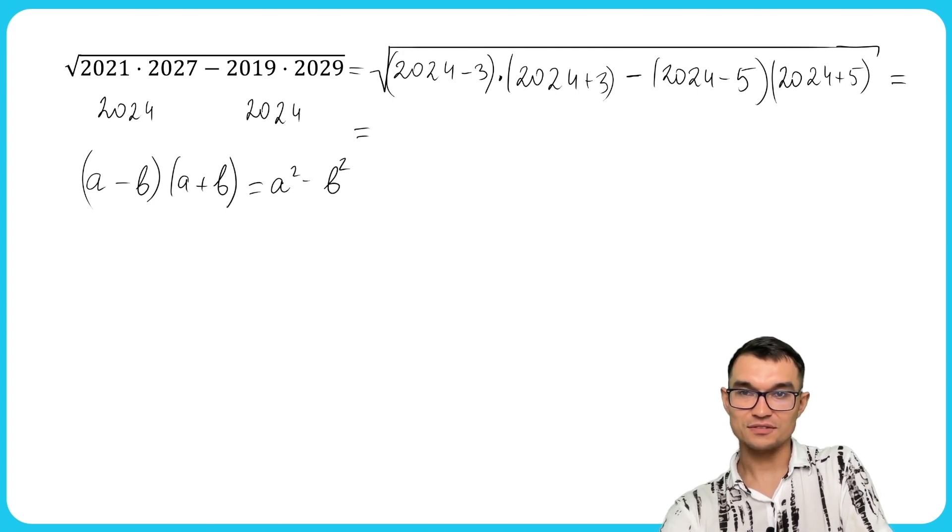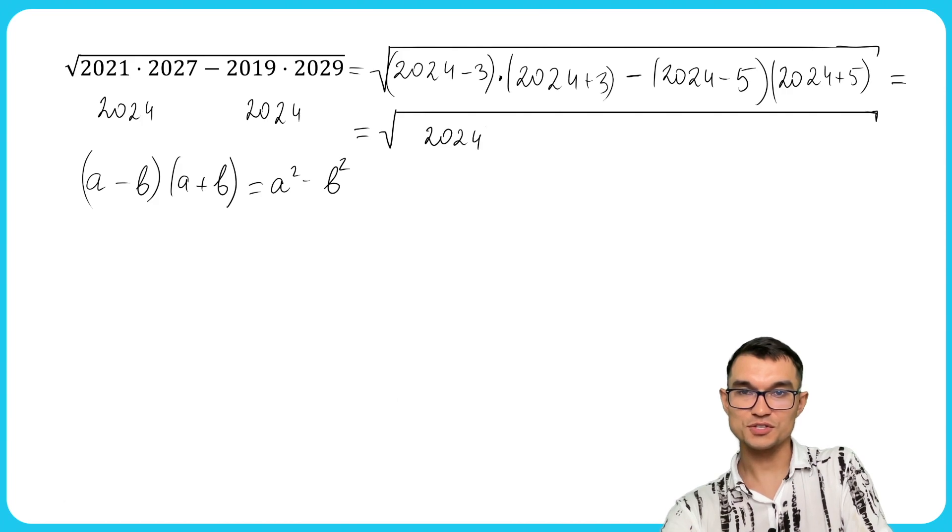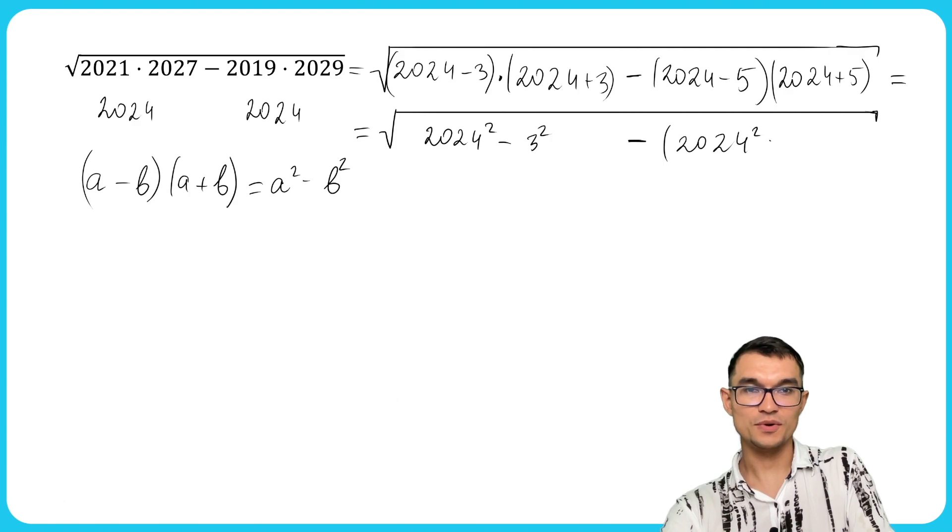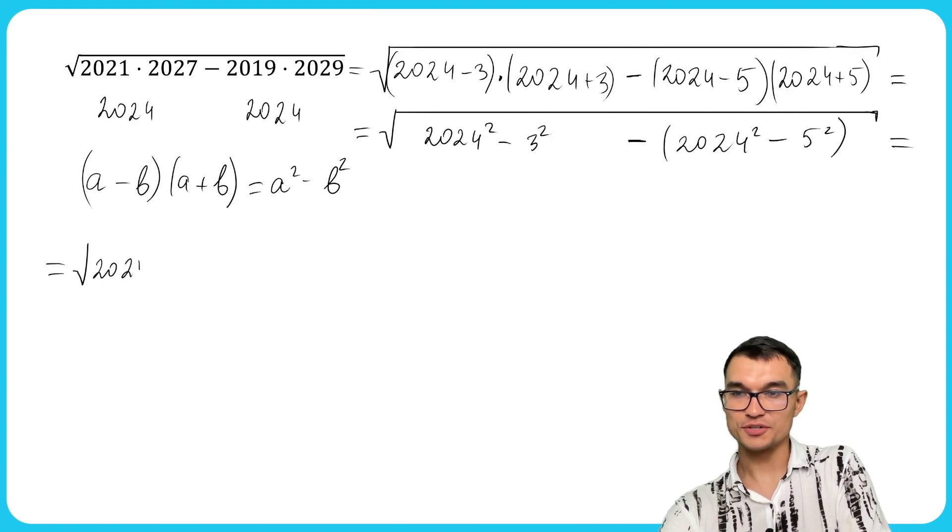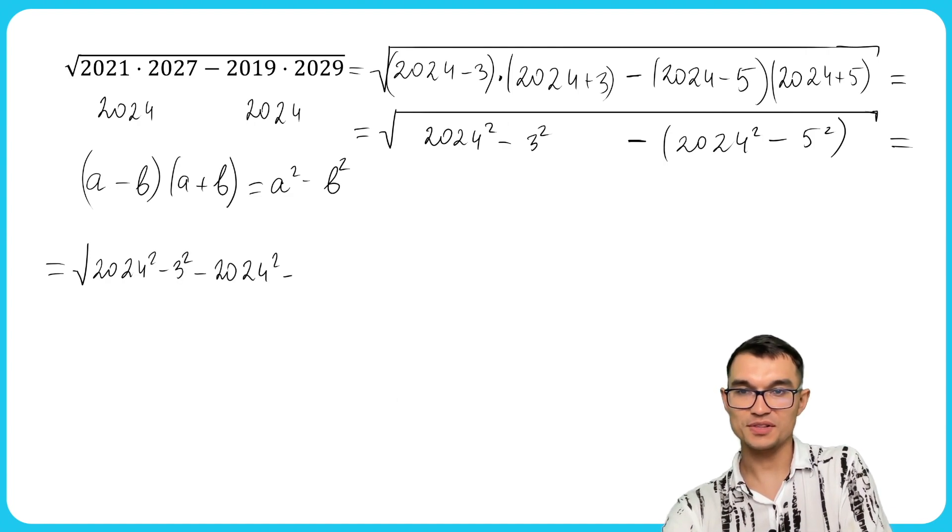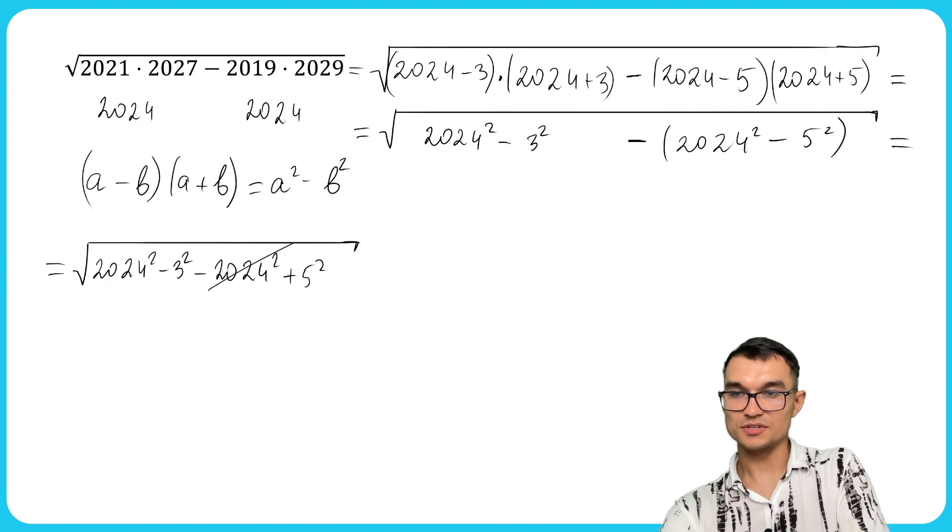So we're gonna have 2024 squared minus 3 squared minus 2024 squared minus 5 squared, which is equal to 2024 squared minus 3 squared minus 2024 squared plus 5 squared. These two numbers cancel each other.